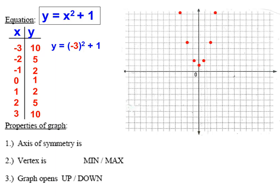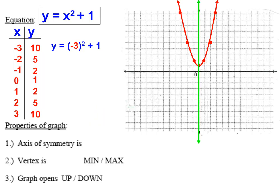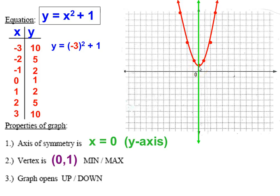Plotting these points, it looks like a v at first, but the more we plot the more we see it actually looks like a u — which is a parabola. Notice it's opening up and we have a minimum at the vertex. The axis of symmetry is the y-axis, where x equals 0. The vertex is at (0, 1) — it's at the very bottom of the parabola, and it's a minimum because the graph opens up.